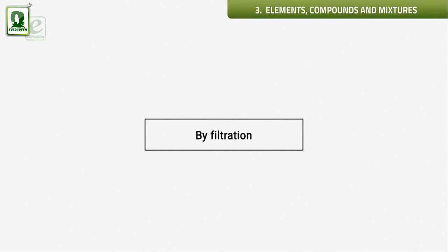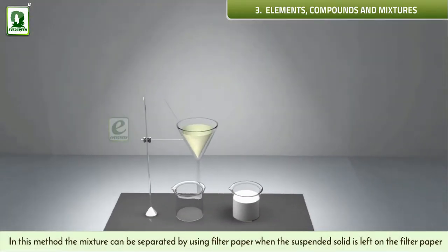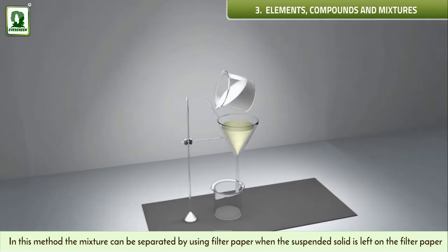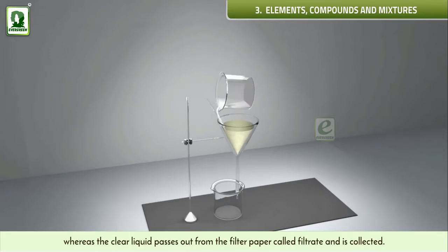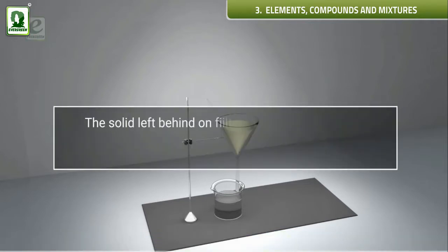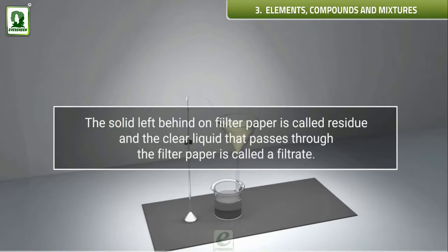By filtration: in this method, the mixture can be separated by using filter paper. The suspended solid is left on the filter paper whereas the clear liquid passes through and is collected — this liquid is called the filtrate. The solid left behind on the filter paper is called the residue.